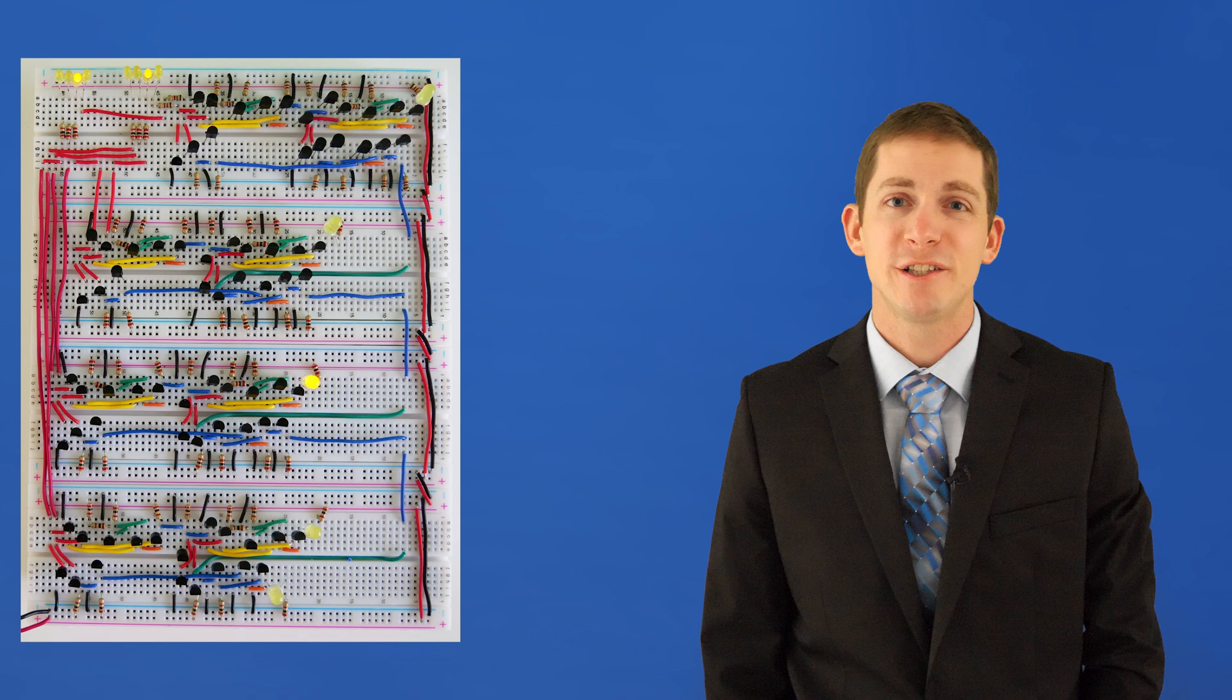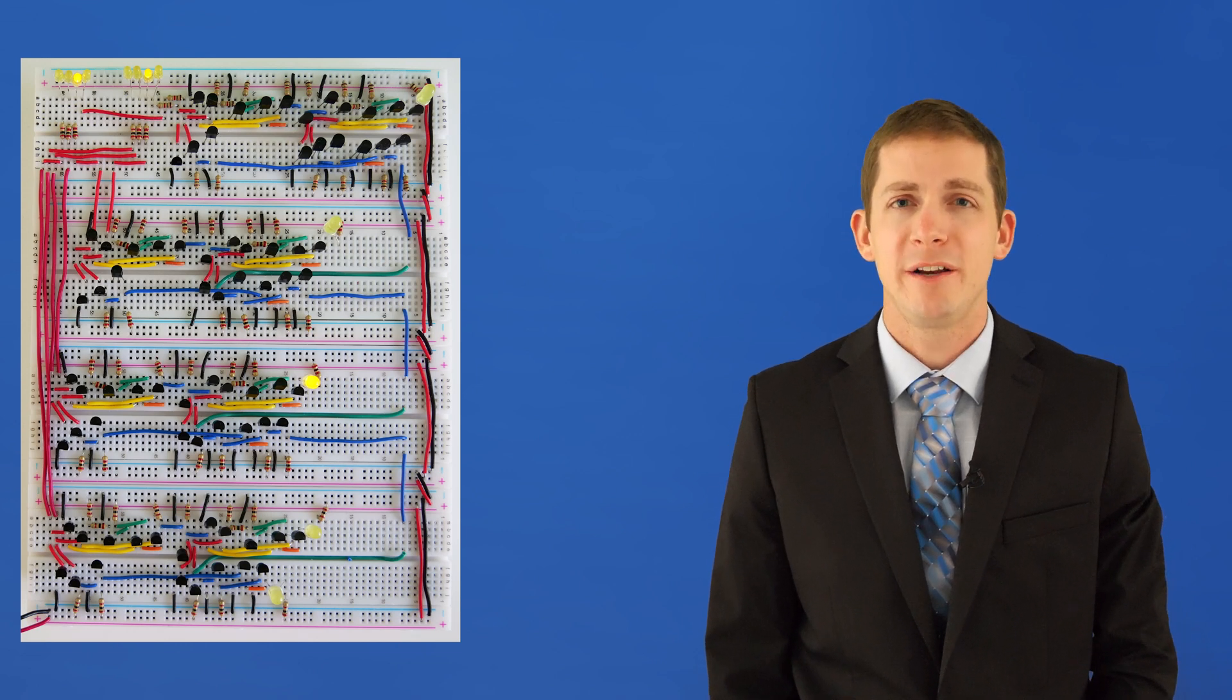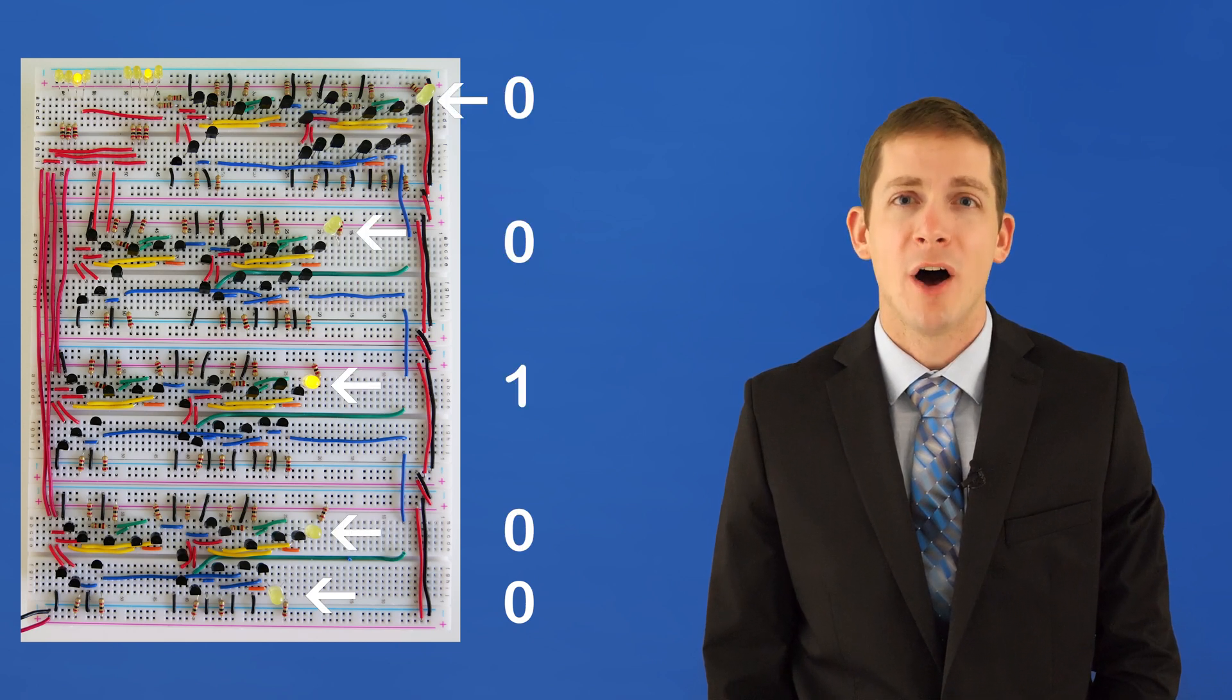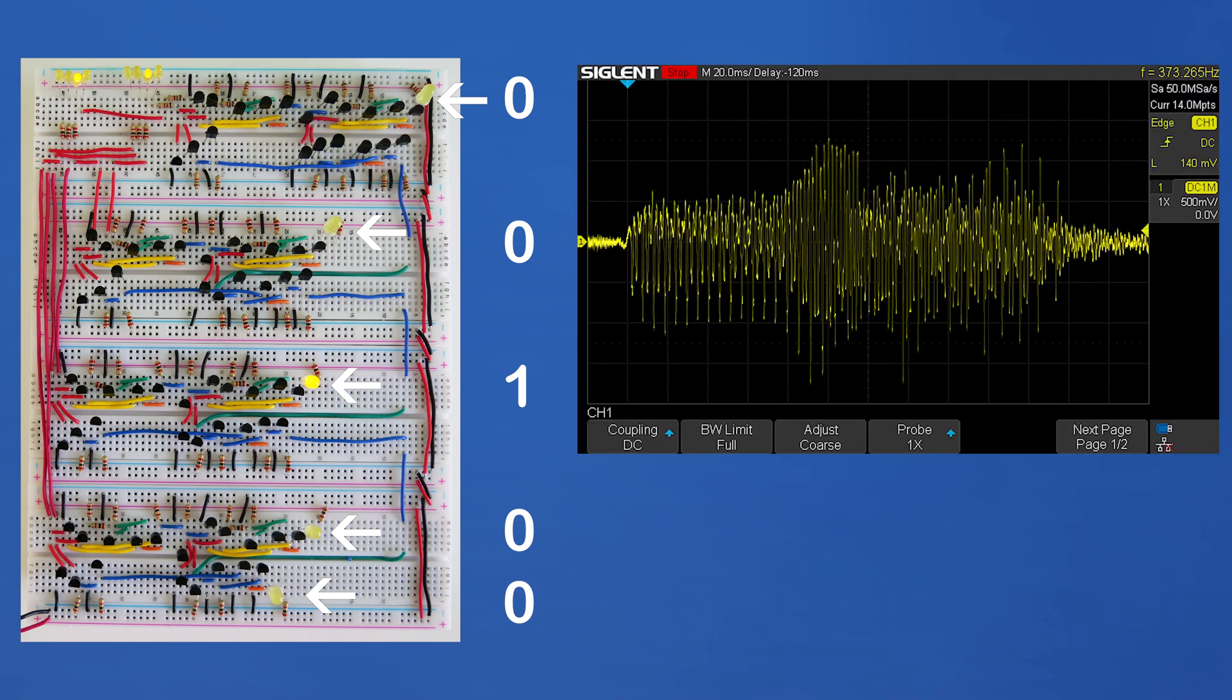Now the question to ask yourself is: does the binary representation of four, which is 00100 on this four bit calculator, equal the same as the analog four that is displayed on the digital oscilloscope?